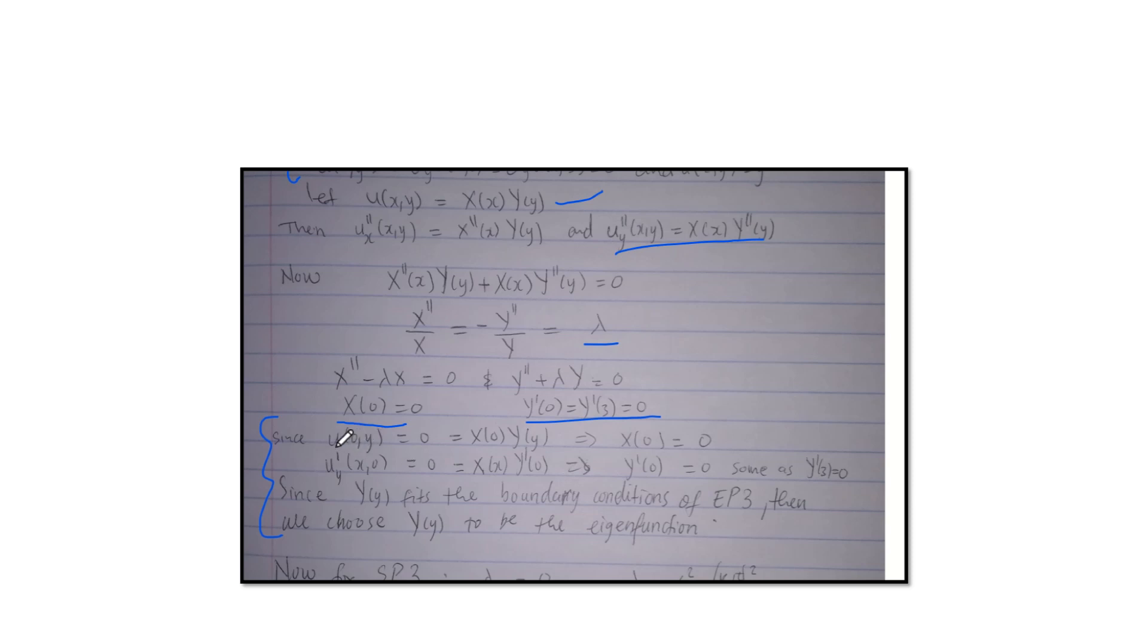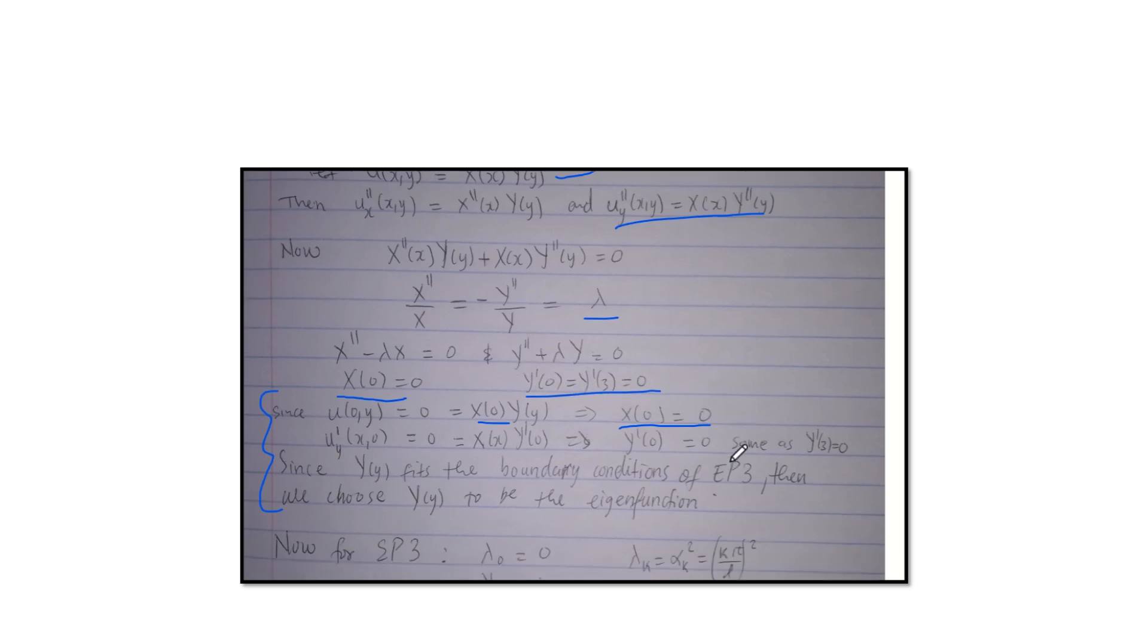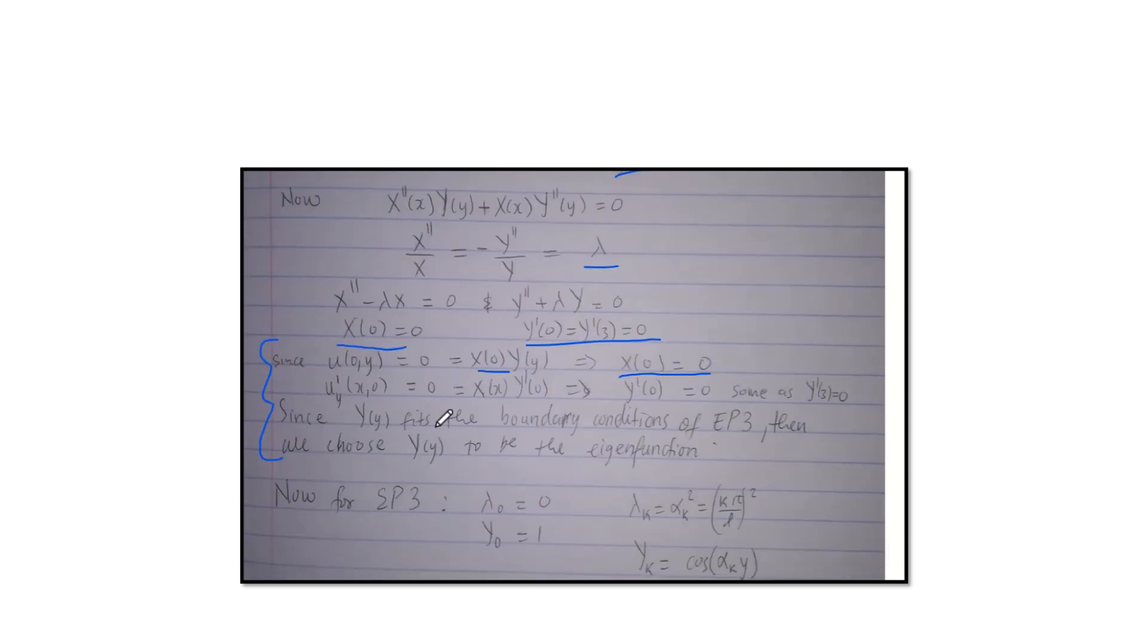So if we have u of x zero equals to zero, that means u of x zero and u of y one equals to zero as well, that implies that x zero. So same applies for these ones. So that is how we got those. And then since y of y fits the boundary conditions of eigenproblem three, then we choose y of y to be the eigenfunction.